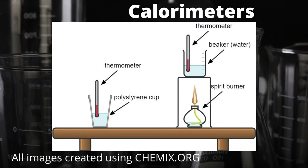We're going to start out here looking at two different types of calorimeter. The one on the left is often described as the direct method and the one on the right is often described as the indirect method. For the apparatus on the left, you can see we've got a thermometer directly in a solution where a reaction would take place, held in a polystyrene cup. We're using a polystyrene cup because it's a better insulator of heat than a glass beaker and it causes less heat loss to the surroundings which would affect our outcome. The associated calculation with this apparatus is q = mcΔT to find out the energy change and then -q/n, n being the number of moles, to find out the enthalpy change of the reaction taking place.